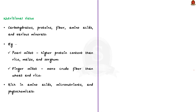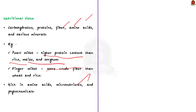The nutritional value of millets is very significant. They contain carbohydrates, proteins, fiber, amino acids, and various minerals. Different millet varieties have different nutrient profiles. For example, pearl millet has higher protein content than rice, maize, and sorghum. Finger millet has more crude fiber than wheat and rice. Also, millets are rich in amino acids, micronutrients, and phytochemicals, making them an important source of nutrition.